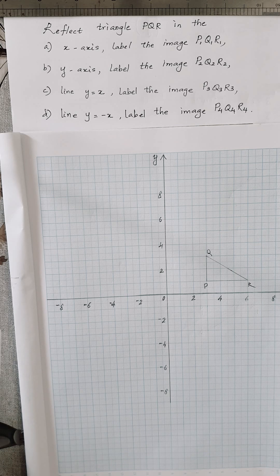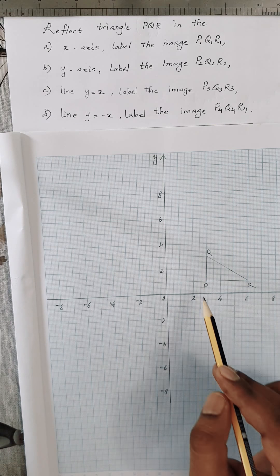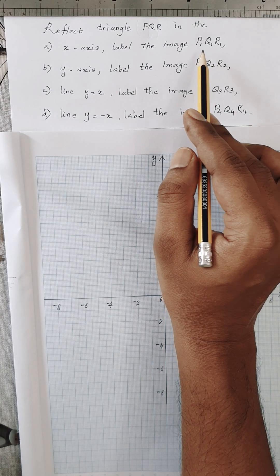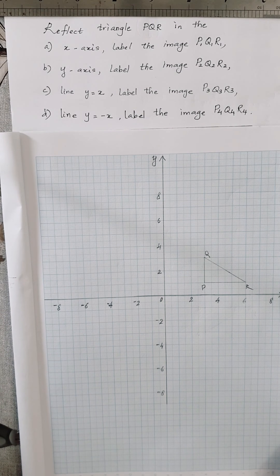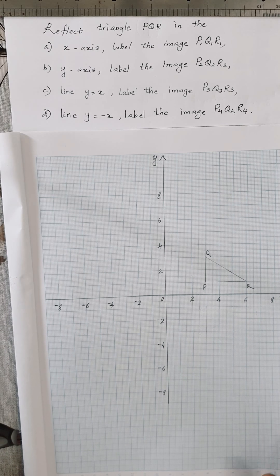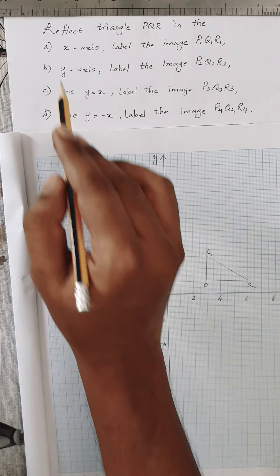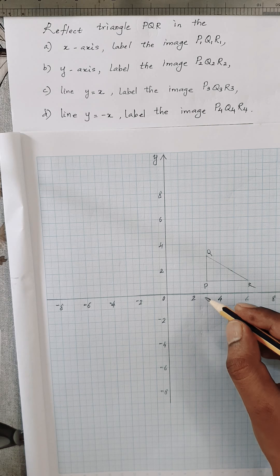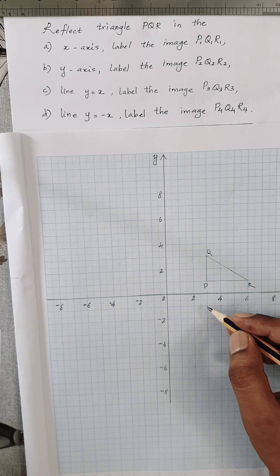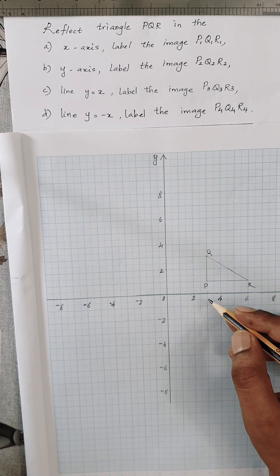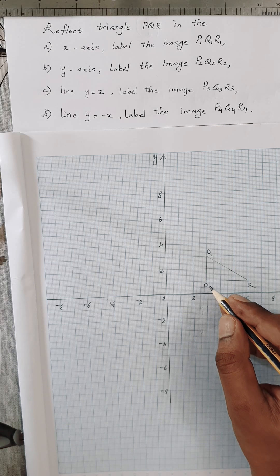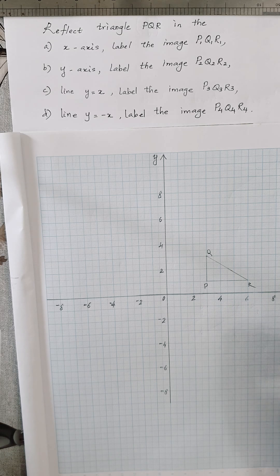Mirror line represents the position of the mirror. Let's take an example. Here you are given a triangle PQR. The question is: reflect triangle PQR in the x-axis, label the image P1, Q1, R1. There are two conditions which have to be satisfied in reflection. One is that the x-axis represents the mirror line. When you reflect, the reflection should be perpendicular to the mirror line — perpendicular means it's at right angles. The second condition is the object and the image must be equidistant from the mirror line. The distance of the object from the mirror line and the distance of the image from the mirror line should be equal.